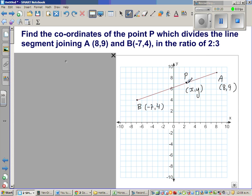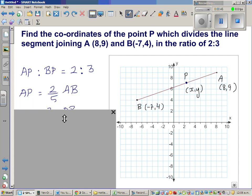So I've taken a point P, an arbitrary point somewhere between A and B, and that is dividing this line segment AB in the ratio of 2 is to 3. Now what does that mean? That first means is AP is to BP is 2 is to 3. So if AP is 2 parts, BP is 3 parts.